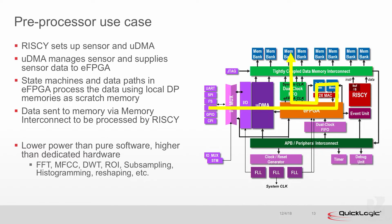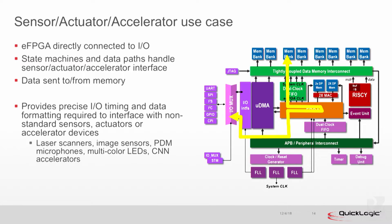In the preprocessor use case, you read from the sensor, bring it into the EFPGA, do some processing, push it back into memory, and then do further processing — using the micro-DMA to manage sensors and the EFPGA state machines to process data. Same trade-off: lower power than software, higher than dedicated hardware. You'll see FFTs, MFCCs, and DWTs here, but moving into image processing you see things like region-of-interest selection, subsampling, histogramming, and reshaping of regions — non-conventional processing that's actually better done in hardware than in software or even a DSP.